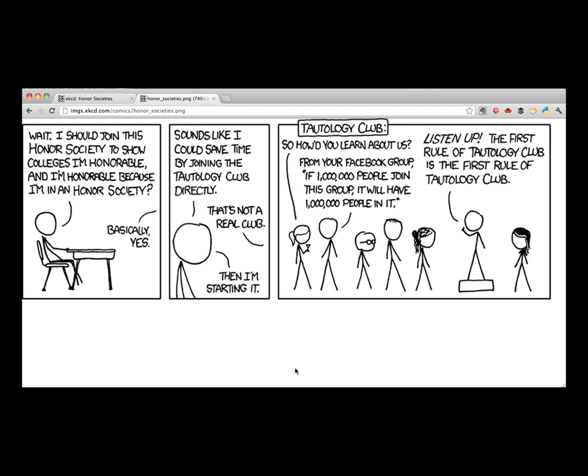So I would be remiss in talking about tautologies if I didn't mention this great XKCD comic that really gets to the heart, in my opinion, of what a tautology really is. For example, the Facebook group, if a million people join this group, it will have a million people in it. Or the first rule of the tautology club is the first rule of the tautology club. Just a statement that's always true that restates the obvious. And it's important to know when you're dealing with a statement that looks complicated, like it might have some wrinkles in it, knowing that it's a tautology says that really there aren't any wrinkles to this. The statement is actually pretty obvious. But sometimes it takes a lot of work to figure out whether something's obvious.